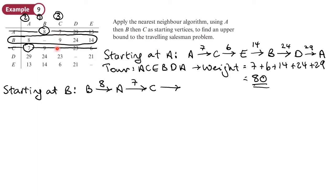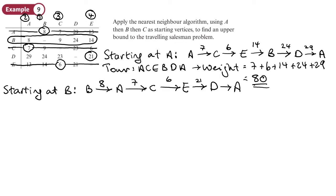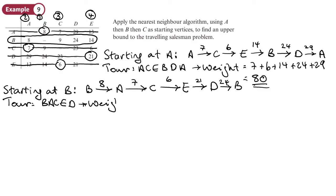Now I look at column C. The lowest weight there takes me to E — that's step four with weight 6. Now from E to D we've got no choice; it has to be weight 21 to get to D. Then finally D back to B, which is 24. The tour for this one is B, A, C, E, D, B. The weight is 8 + 7 + 6 + 21 + 24, which gives a weight of 66.